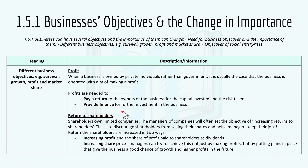Return to shareholders or dividend: shareholders own limited companies and the managers of companies will often set the objective of increasing returns to shareholders, to discourage shareholders from selling their shares and to help managers keep their jobs. Returns to shareholders are increased in two ways: by increasing profit and the share of profit paid as dividends, as well as increasing share price, where managers try to achieve this not just by making profit but by putting plans in place that give the business a good chance of growth and higher profits in the future.